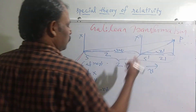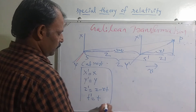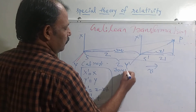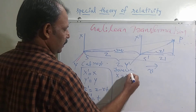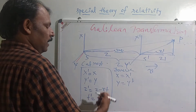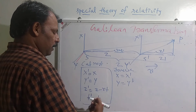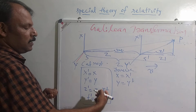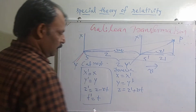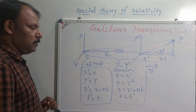In Galilean transformation, time is taken as invariant, so T prime equal to T. These are the transformation equations in Galilean transformation. The inverse transformation can be written as X equal to X prime, Y equal to Y prime. The inverse transformation is obtained by interchanging the sign of velocity, so Z equals Z prime plus VT, and T equals T prime.